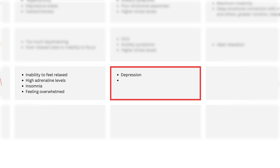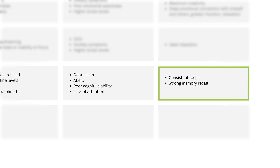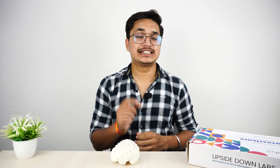High levels of beta waves are associated with inability to feel relaxed, high adrenaline levels, insomnia, or feeling overwhelmed. Low levels correspond to depression, ADHD, poor cognitive ability, and lack of attention. When beta waves are in the optimum range, it corresponds to consistent focus, strong memory recall, and high problem-solving ability.